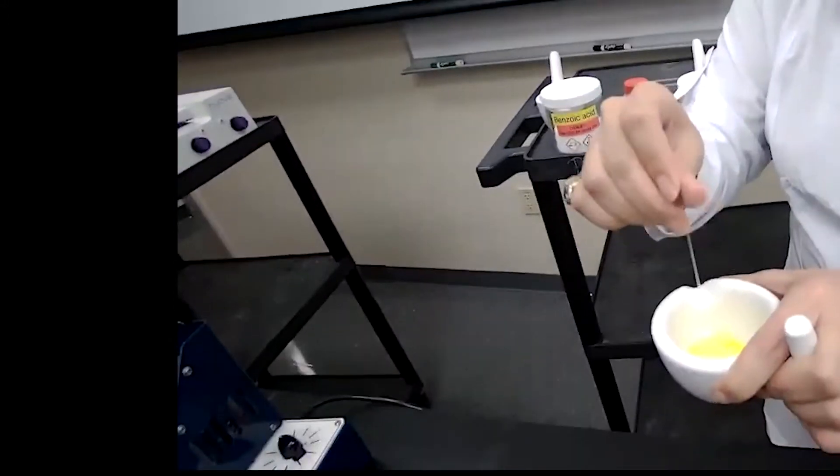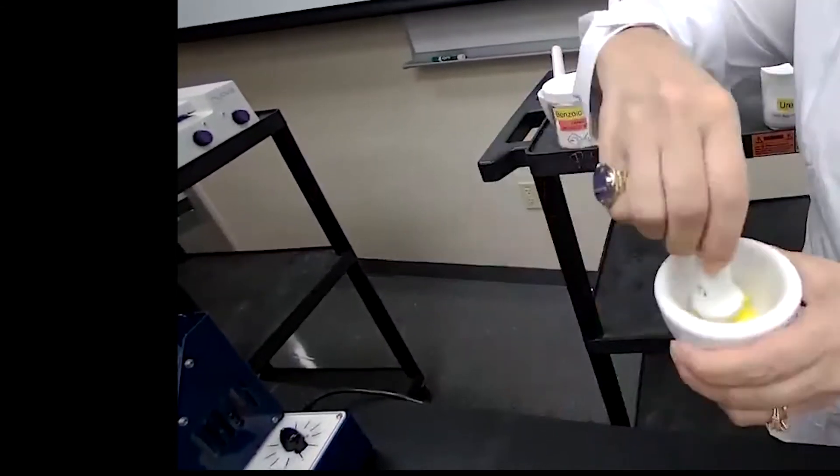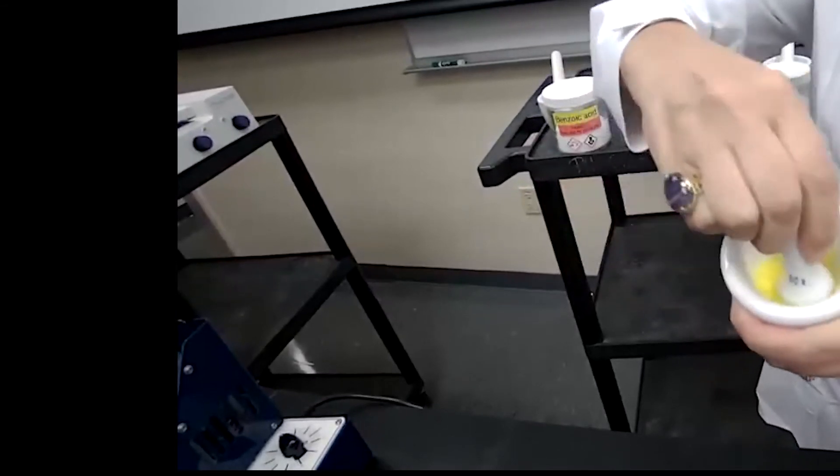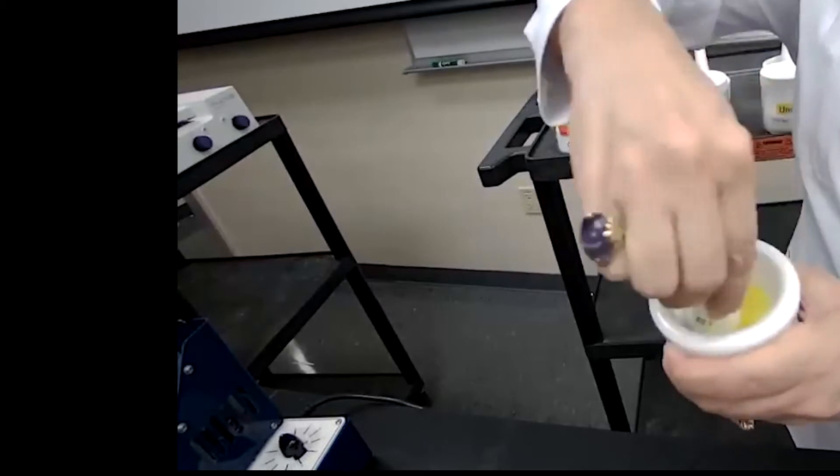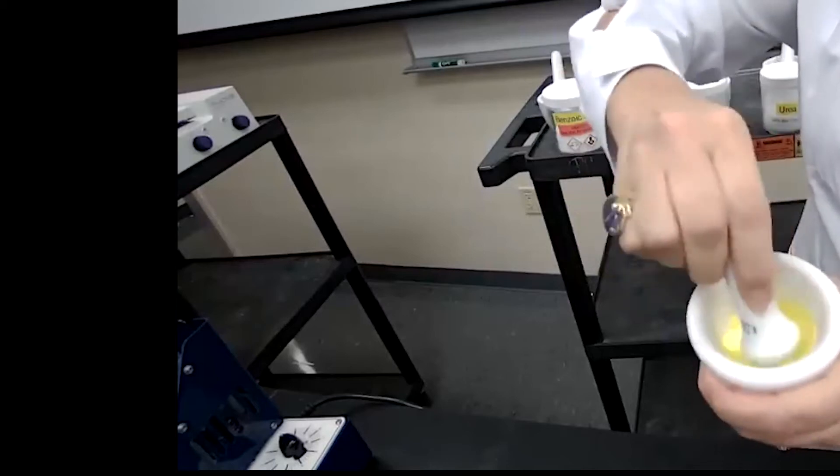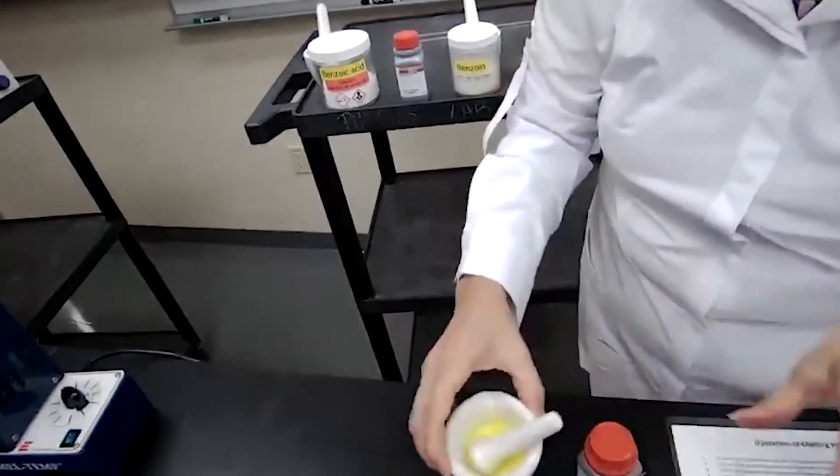So first step for us in the sample prep is to grind the sample to get into like finely powdered sample, which feeding the capillary tube is going to be then much easier. So we are going to grind the sample. The sample is now finely powdered.